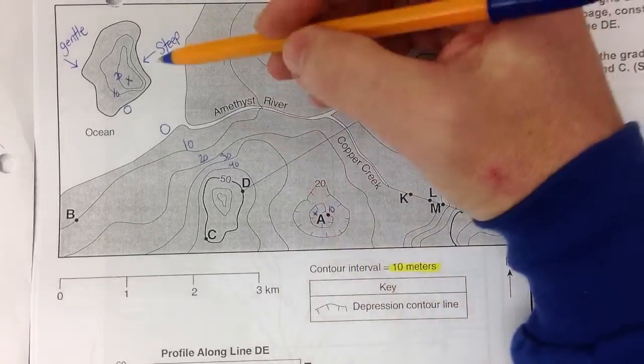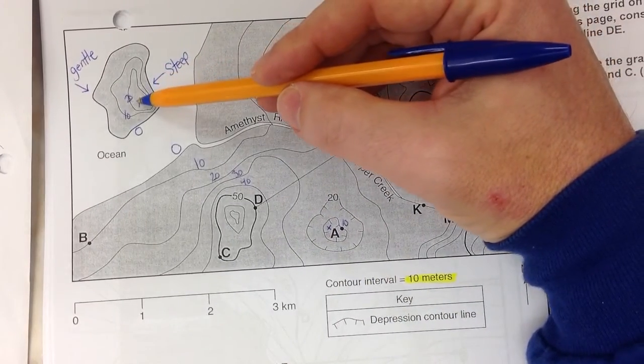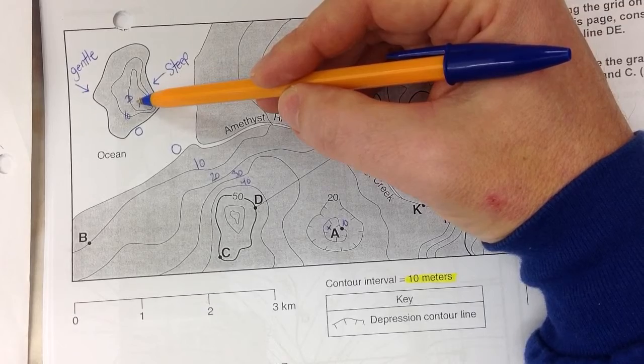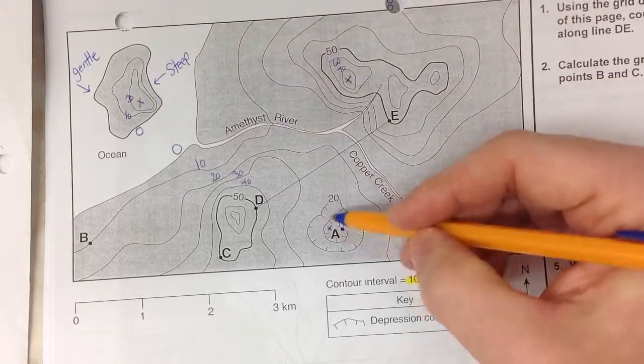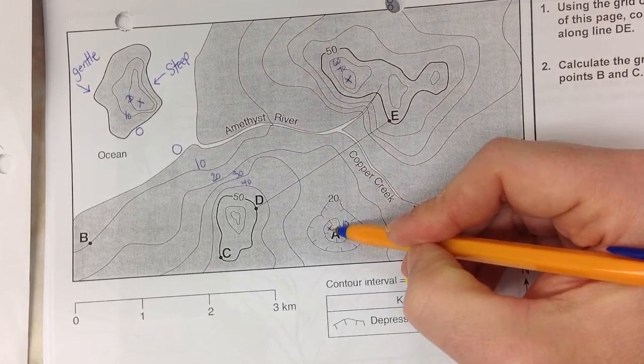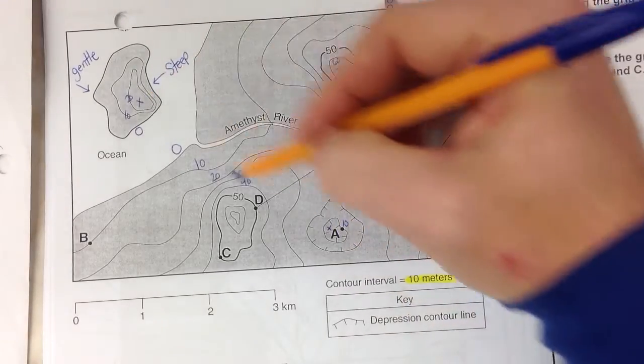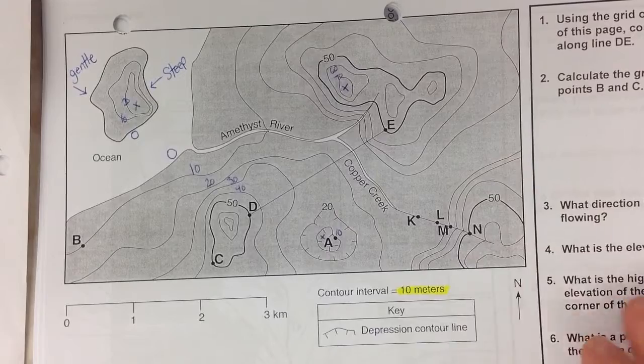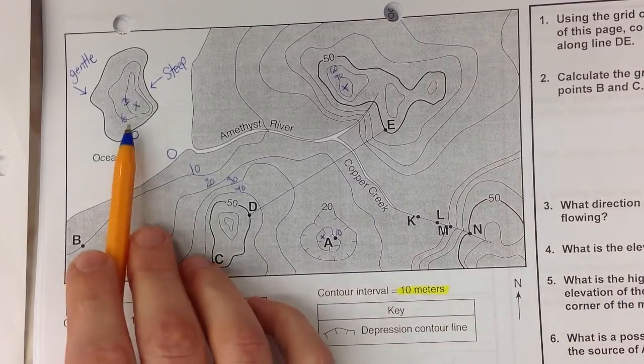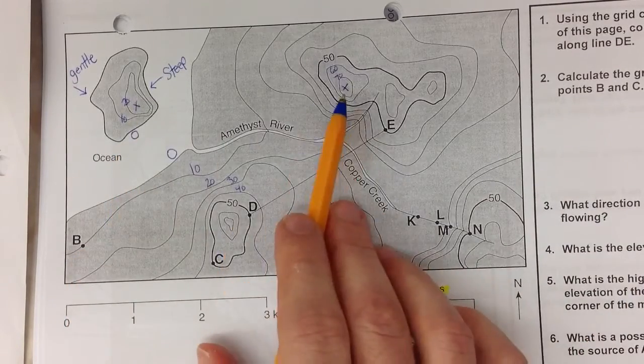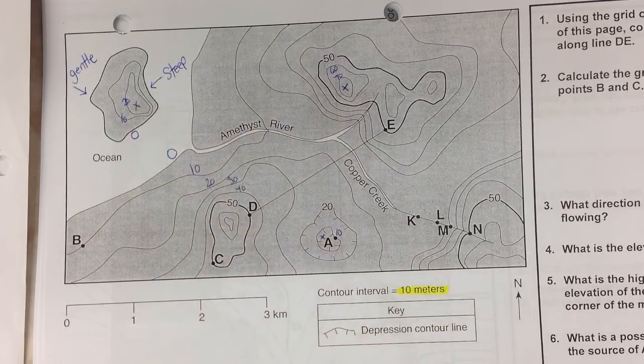So the highest possible elevation is always one less than the next contour line. The deepest possible point is one greater than the next contour line. Just keep that in mind in terms of those little rules. So we got the depression, the hill structures, the highest possible points, and the lowest possible points.